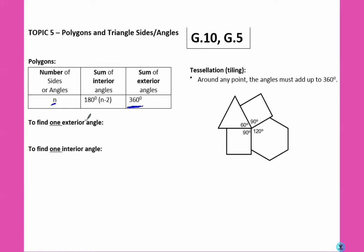If you need to find one exterior angle, you're just going to take 360 degrees and divide it by the number of sides. If you need to find one interior angle, you could take this formula and divide it by the number of sides. But one exterior angle plus one interior angle add up to 180 because they form a straight line. So what you can do is 180 minus whatever the exterior angle came out to be, and I think that's easier to remember.